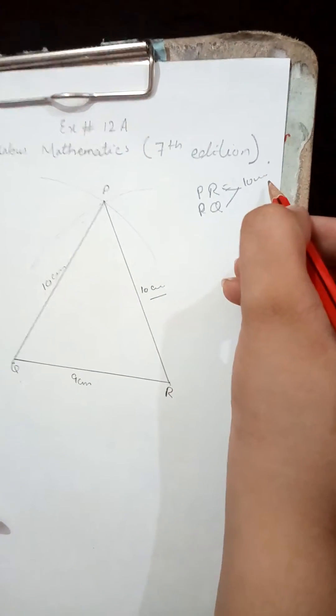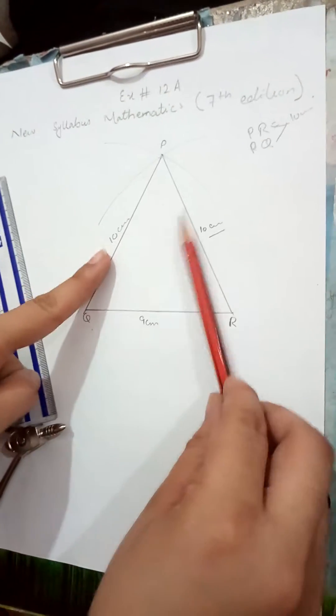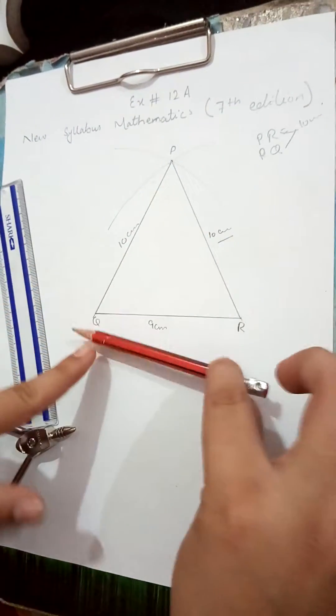So the triangle is constructed. We have constructed an isosceles triangle with two line segments of the same length and one of different length. Now we can find angle QPR.